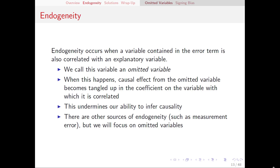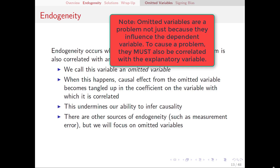In our example, when we left income out, the effects of income moved into the error term. And since income and price were correlated, we now had correlation between our explanatory variable and the error term. That's going to violate our assumption, resulting in endogeneity. When we have a variable that is hiding out in the error term that is also correlated with an explanatory variable, we say that that is an omitted variable — a variable that really we should have in our equation, but it's not there. It was omitted.